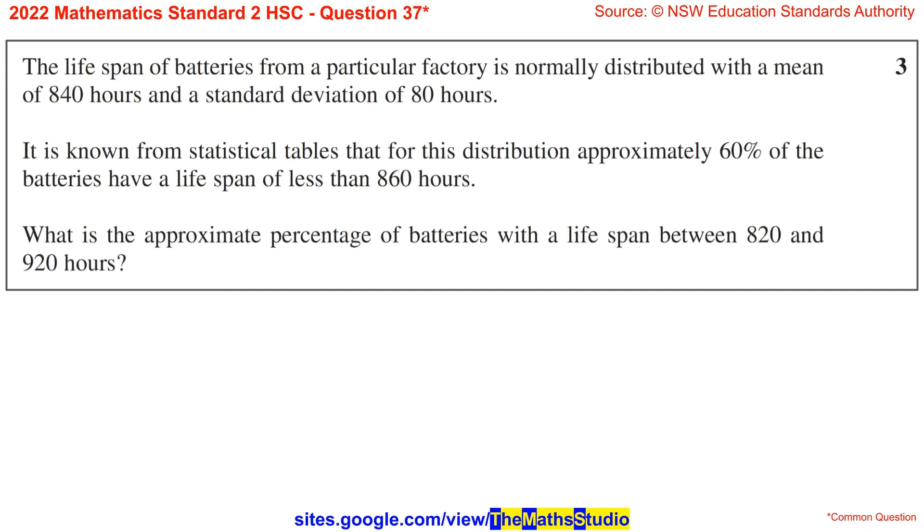Question 37. The lifespan of batteries from a particular factory is normally distributed with a mean of 840 hours and a standard deviation of 80 hours.